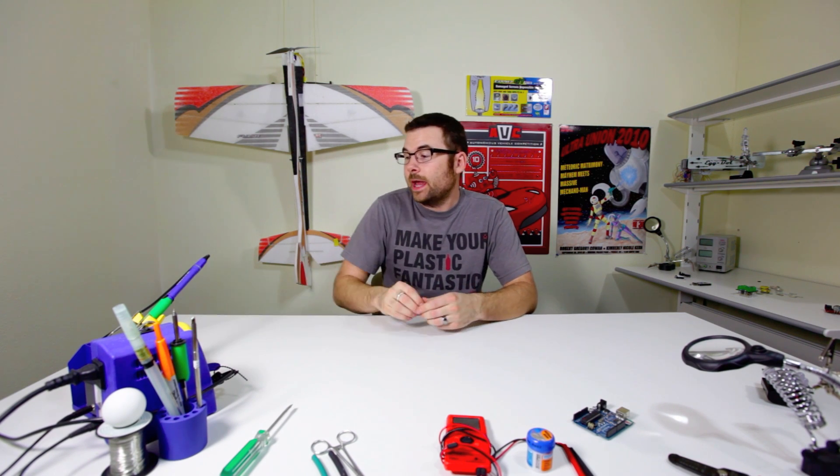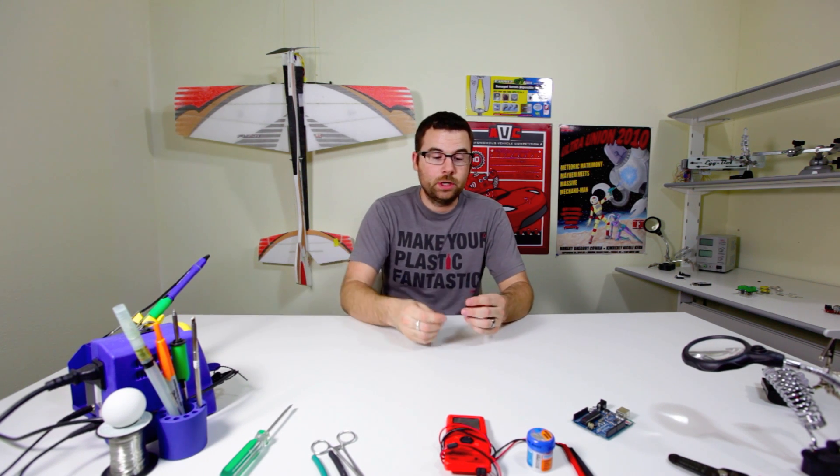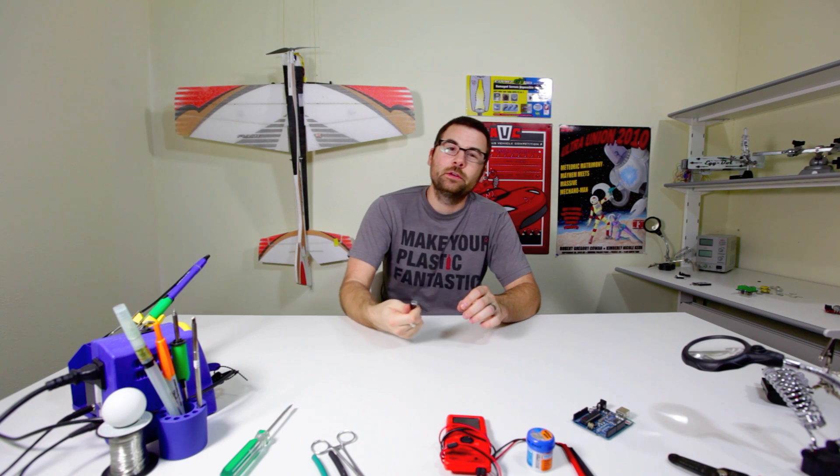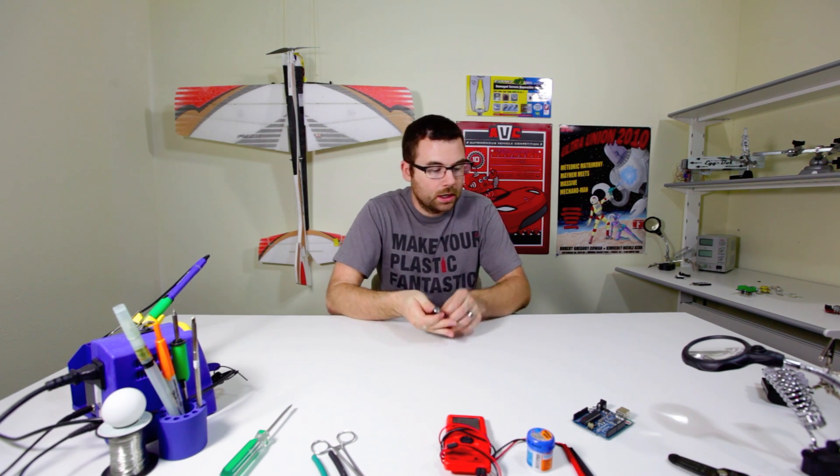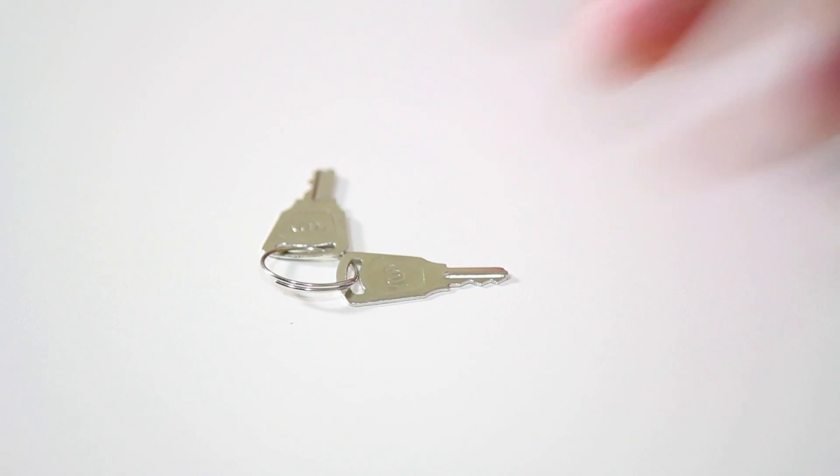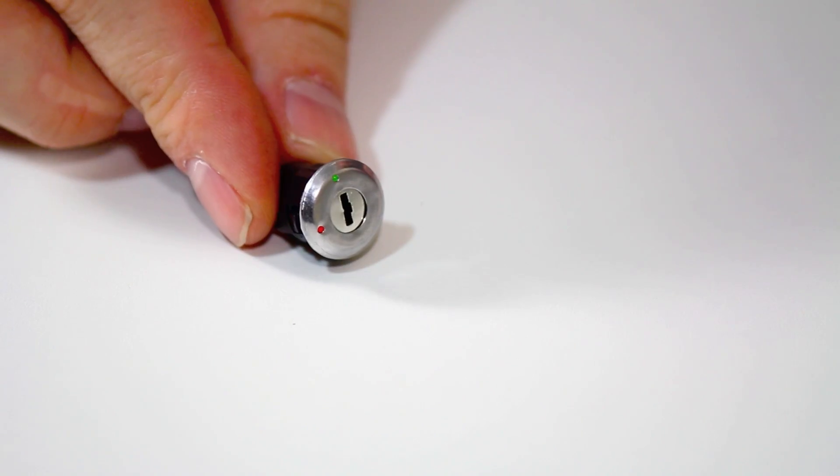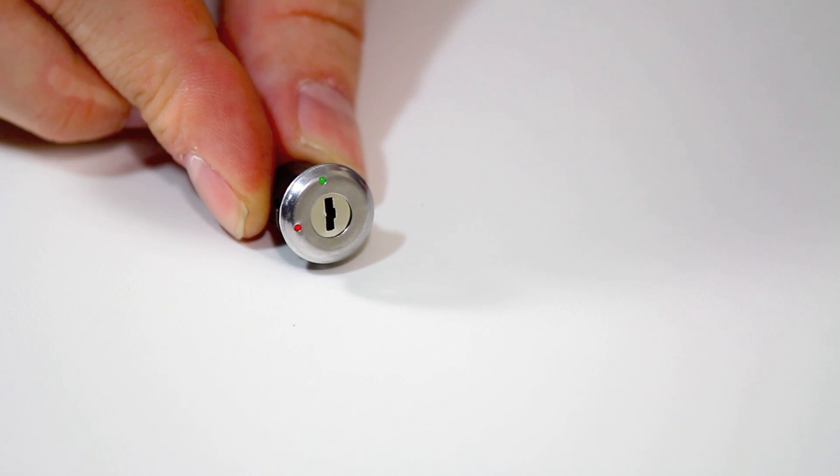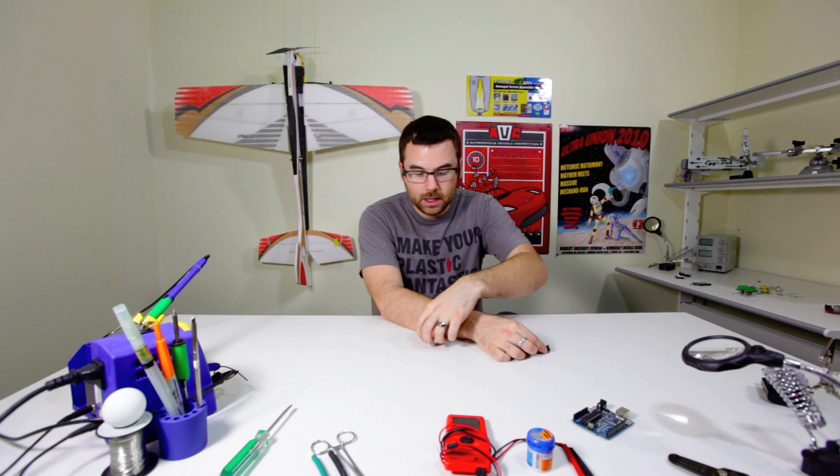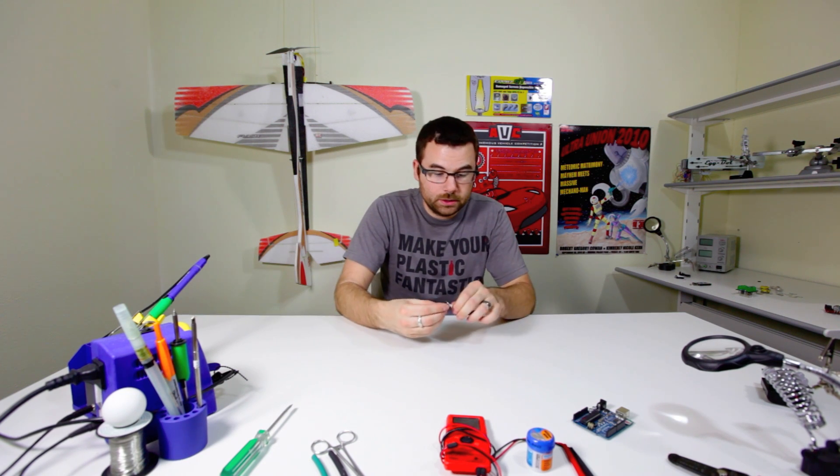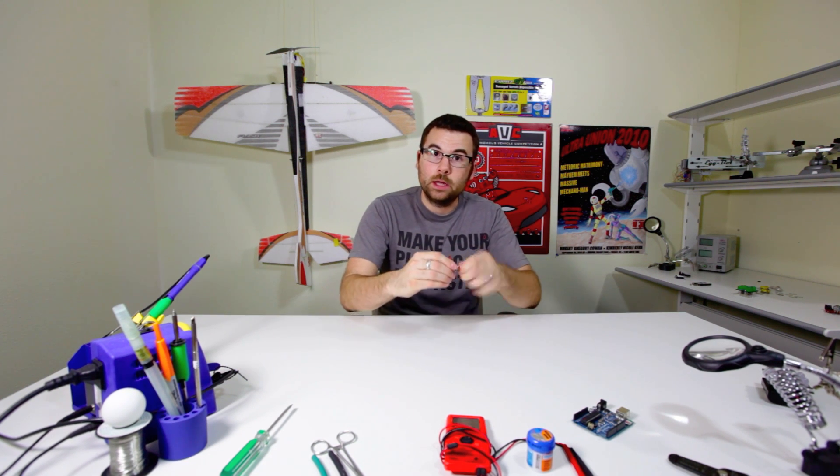And we've also got a handy little miniature key switch. This is a lot smaller than some of the other key switches you might have seen. It comes with a set of two keys and the key switch itself. It's relatively small. You can panel mount this and the way that you operate it is you just put in the key and turn it. And there you go. That's your on and that's your off.